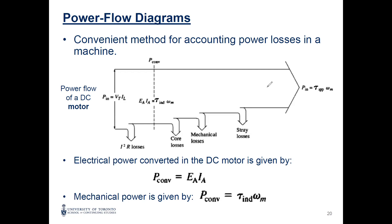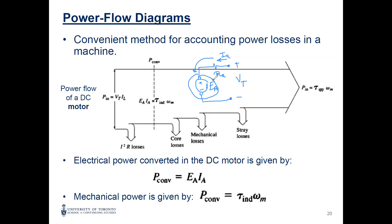Let me draw the equivalent circuit so you can understand E and I. For the DC motor, we have a source V_T at the terminal, current I_A flowing from the source through armature resistance R_A, and the back EMF E_A. The power E_A × I_A is the converted power — converted to the shaft — and it equals torque_induced times omega.